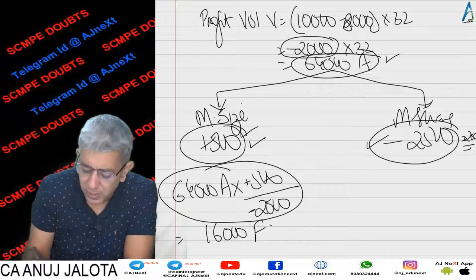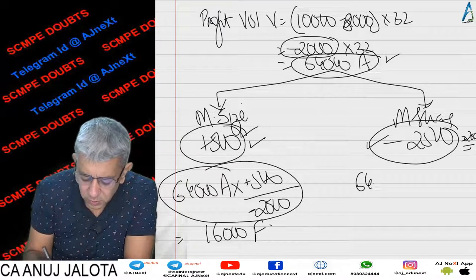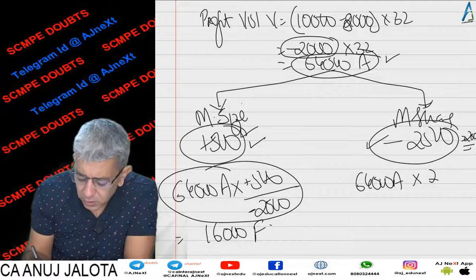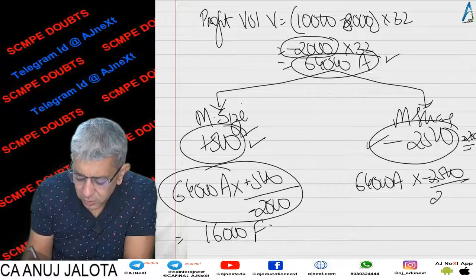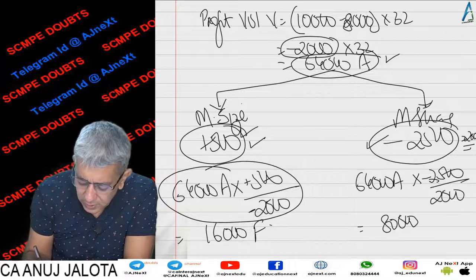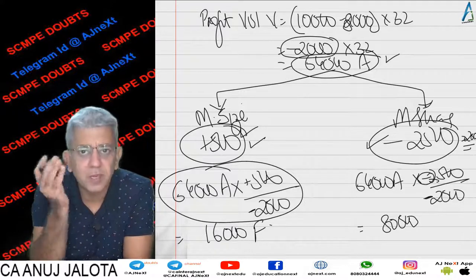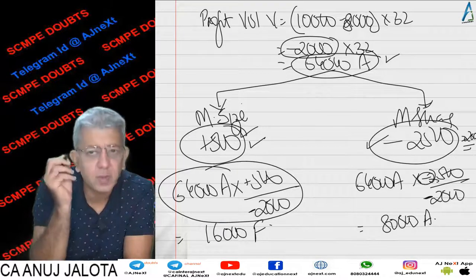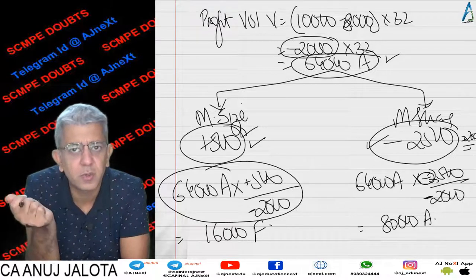For market share: 64,000 adverse into minus 2,500 divided by 2,000. So therefore, the answer will become 80,000. And this was also minus, this is also minus, because we have sold lesser number of units. So the sign will remain adverse only. This is how you do the breakout. Okay, thank you.